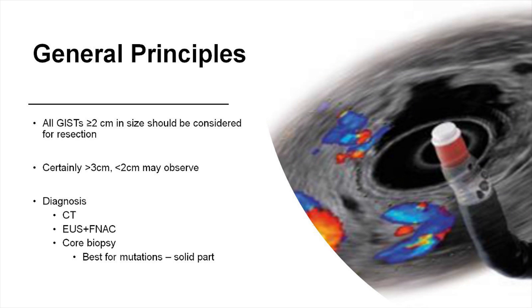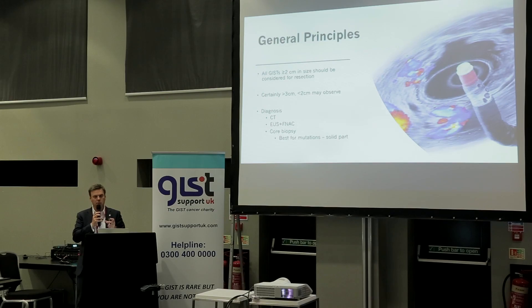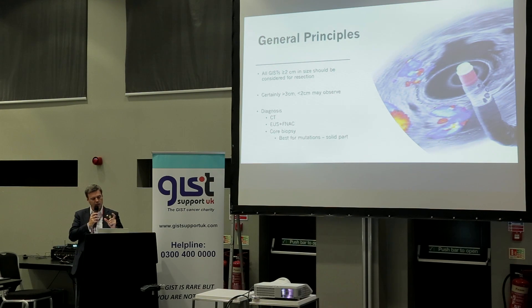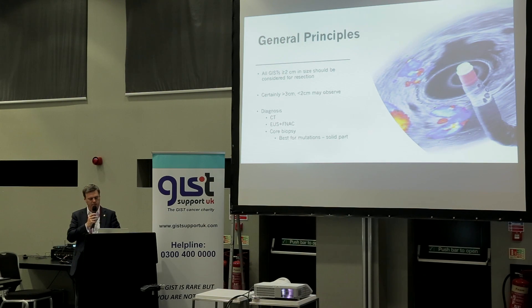How do you diagnose them? CT scan and EUS — an endoscopy with an ultrasound — and then a very fine needle, and sometimes a core biopsy, where you put a needle in and take a bit of solid tissue. That's really good for big GISTs because you can get mutational analysis straight away and work out whether you can have imatinib before surgery. There's a small risk of seeding, but with modern techniques that usually doesn't occur.